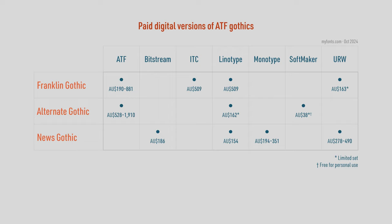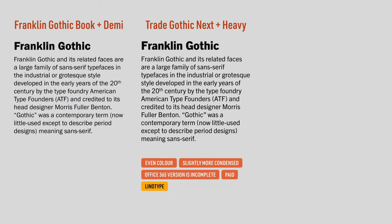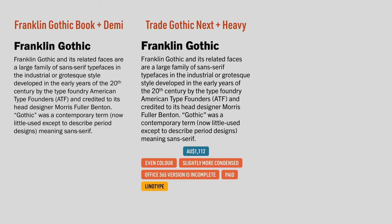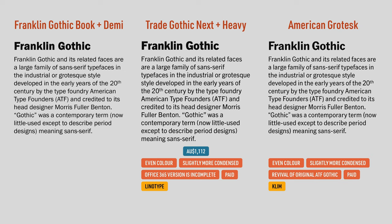Speaking of paid solutions, you could just buy a better version of one of the Franklin Gothic triad. But I think we can do better. An excellent alternative to Franklin Gothic is Trade Gothic Next. Trade Gothic was Linotype's response to American Type Founders' Franklin Gothic. Designed in metal type by Jackson Burke in 1948, it was digitized as Trade Gothic Next in 2009. The good news is that you get a decent part of the Trade Gothic Next family with Microsoft Office 365, including a couple of inline and rounded versions. If you want the full family, that'll cost you just over a thousand Australian dollars.